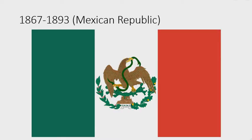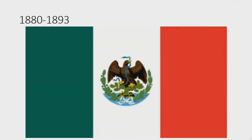1867 to 1893: they changed their name back to the Mexican Republic — it is the same flag as the old Mexican Republic. 1880 to 1893: the eagle and snake are smaller and darker, the flag is darker, and the leaves are now in water while being connected by a white bow.